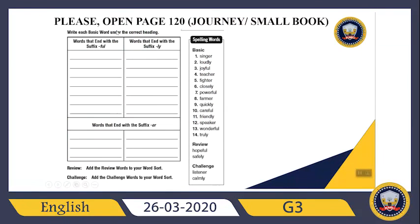Please open page 120 from your Journey, which is your small book. When you open this page, you can see three categories to categorize the words. The first category is words that end with the suffix -ful. The second is words that end with the suffix -ly. The last one is words that end with the suffix -er. So how can you categorize them? Let's check the basic words.